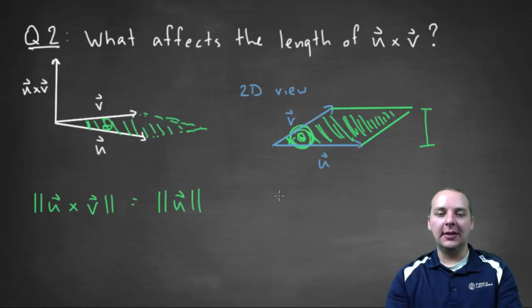Now the height is not the magnitude of v, we have to use this theta as well. And skipping a little bit of the algebra, it's going to be the magnitude of v, times the sine of theta.